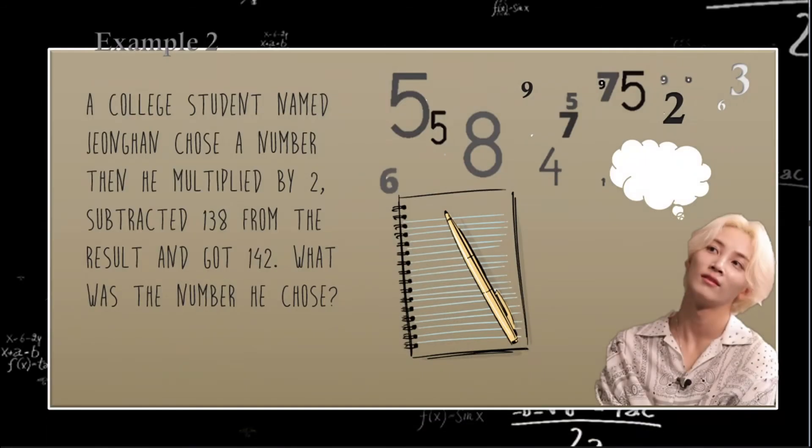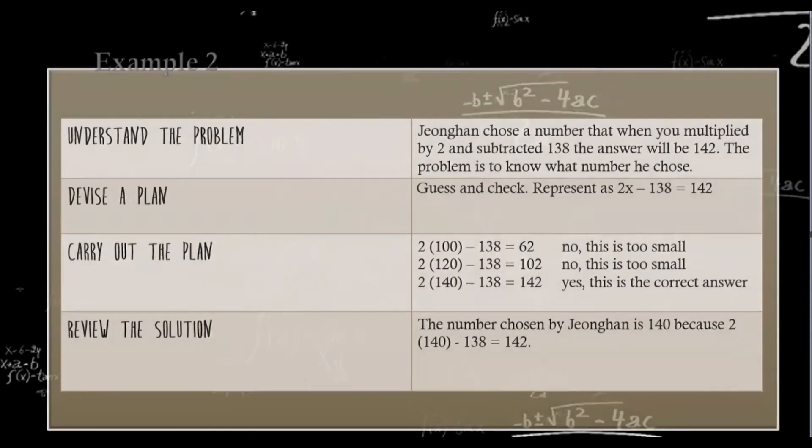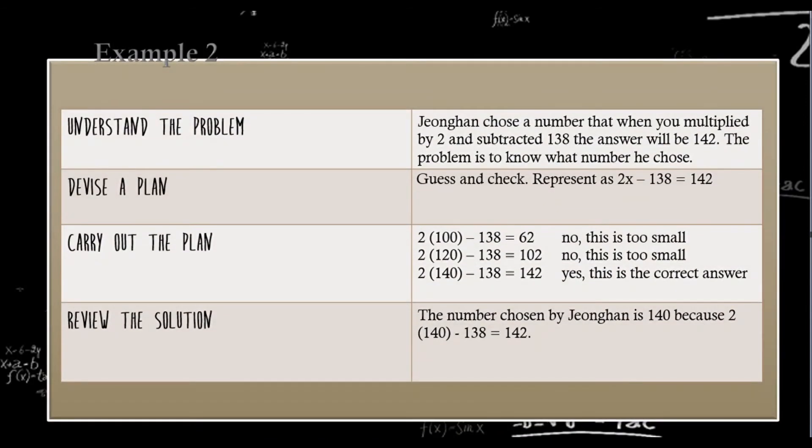For example number 2, a college student named Jonghan chose a number. Then, he multiplied by 2, subtracted 138 from the result, and got 142. What was the number he chose? Let's use the table again. After reading and analyzing the problem, I understand that Jonghan chose a number that when you multiplied by 2 and subtracted 138, the answer will be 142. The problem is to know what number he chose.